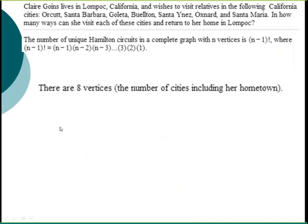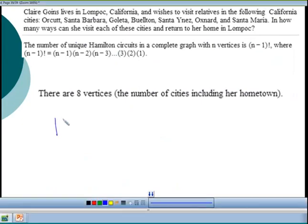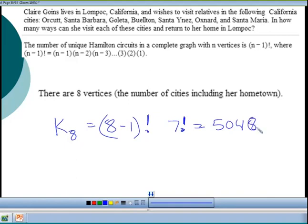To figure out how many different ways you can visit these cities, you have to do 8-1 factorial. You're trying to do a circuit of 8, so it's 8-1 factorial. If you find a calculator, you can do 7 and then push the exclamation mark. I have one on my calculator here. 7 factorial should be 5,040.